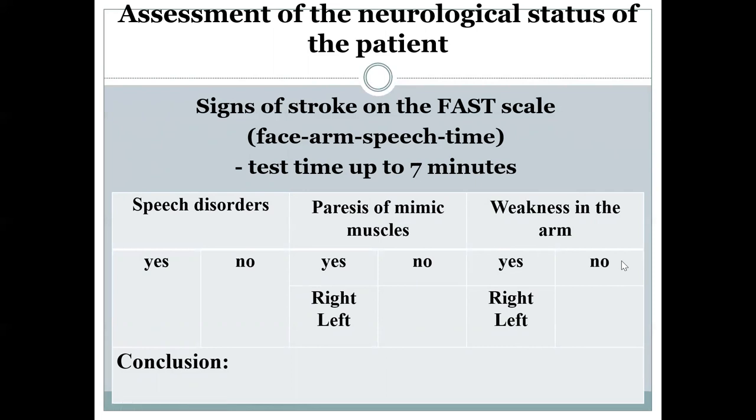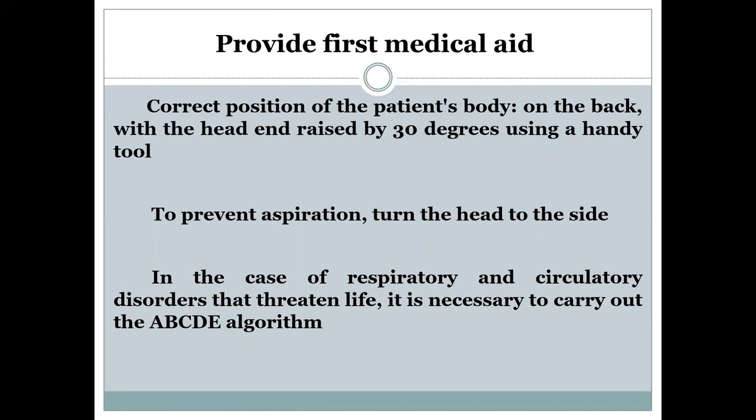If you need to provide first medical aid: first, position the patient correctly — lay them on their back with the head raised 30 degrees using whatever is available, such as a pillow, chair, or dental chair. Then, to prevent aspiration, turn the patient's head to one side. In case of respiratory or circulatory disorders that are life-threatening, immediately carry out the ABCDE algorithm and start resuscitation.